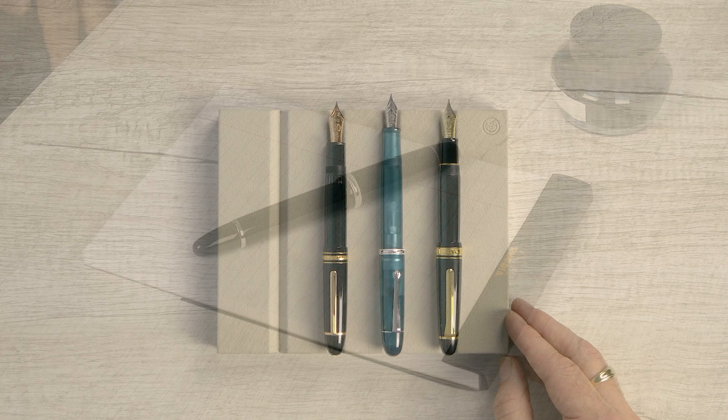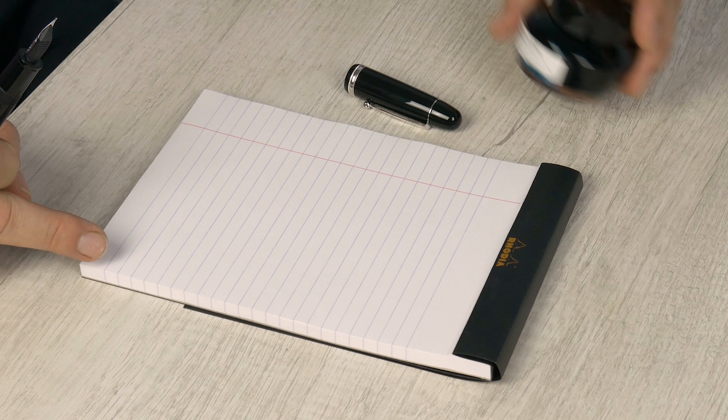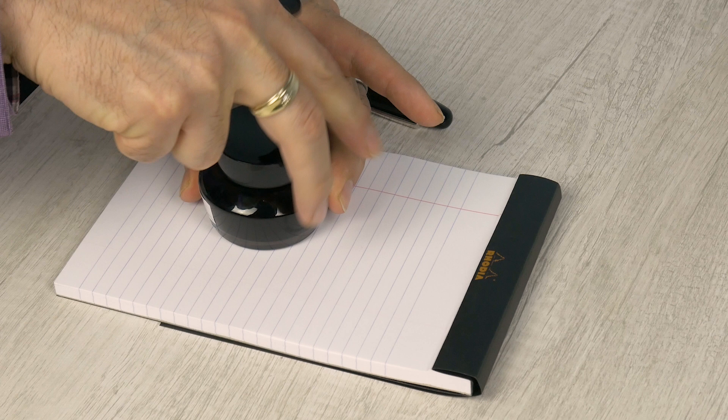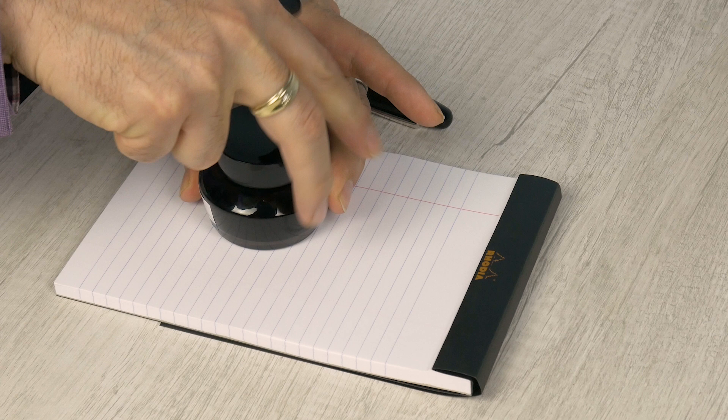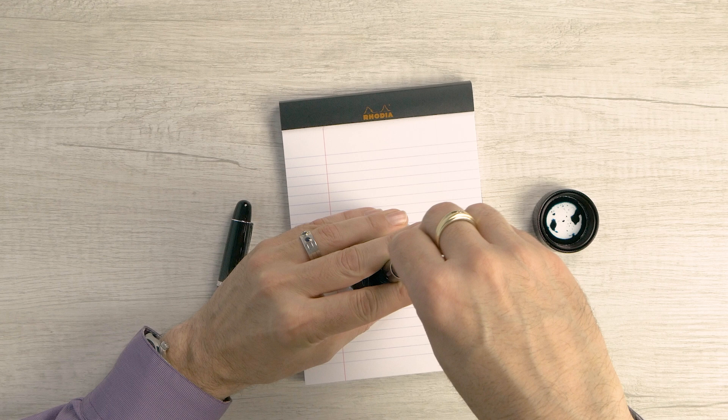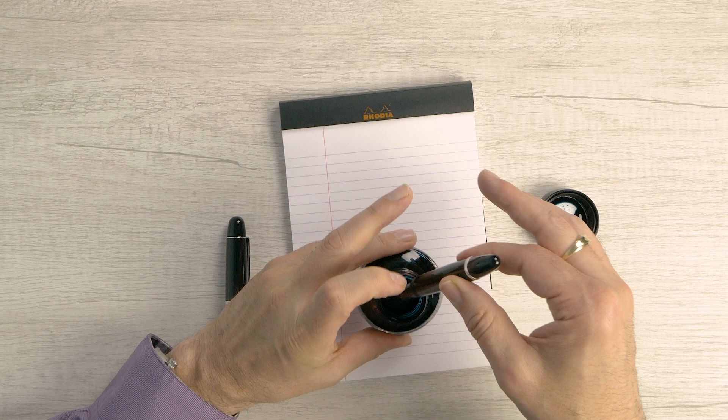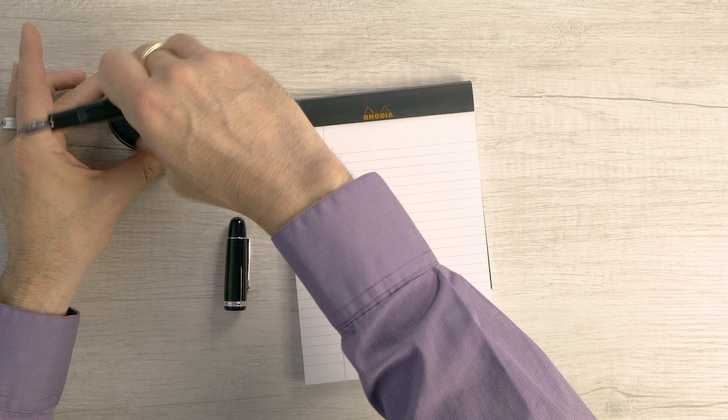Okay. So I've got the black Penlux Masterpiece Grande here. I've got a medium nib on it. I've got my Rhodia number 16 lined pad, and I have my Kobe 44 Sumara Seaside Blue ready to ink it up. So let's see how this works. Just going to put it in there and rotate that piston knob counterclockwise. There we go.